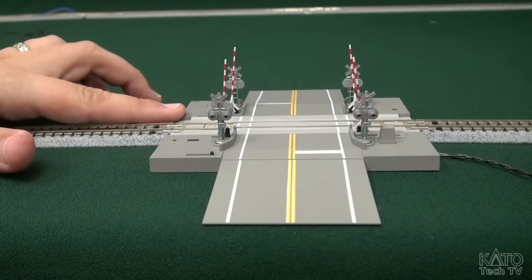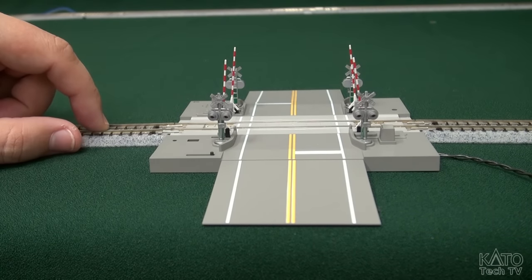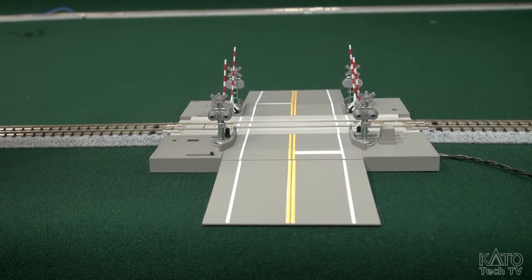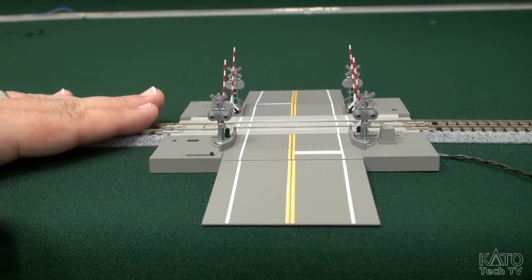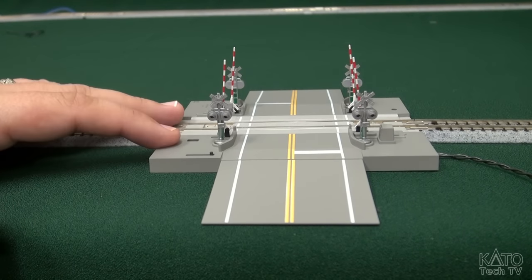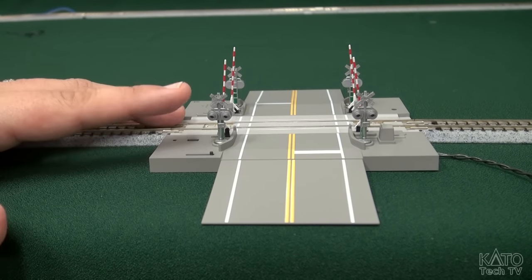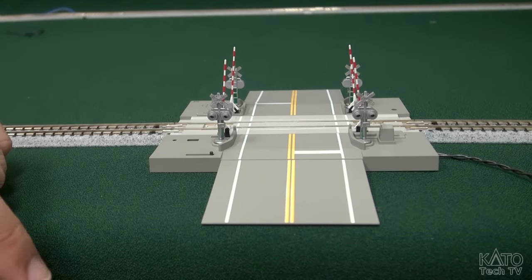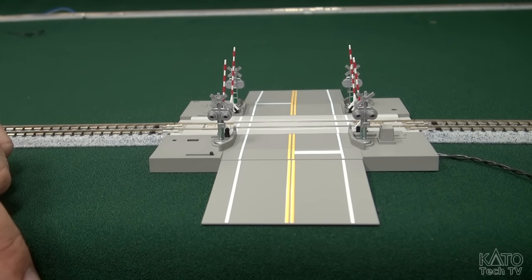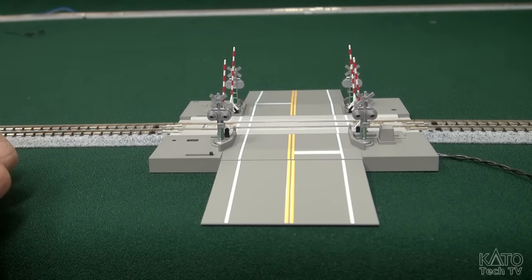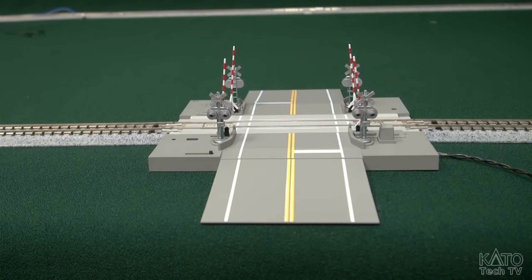And now, I'm going to take my engine and bring it around for a little quick run through. You see, as it runs over the first sensor, it triggers the gates, and when it leaves the second one, they go back up again. Now, obviously, the locomotive was already in the intersection by the time these went down, so that's a little dangerous for your N-scale drivers, but that's why we have the separate sensor tracks.